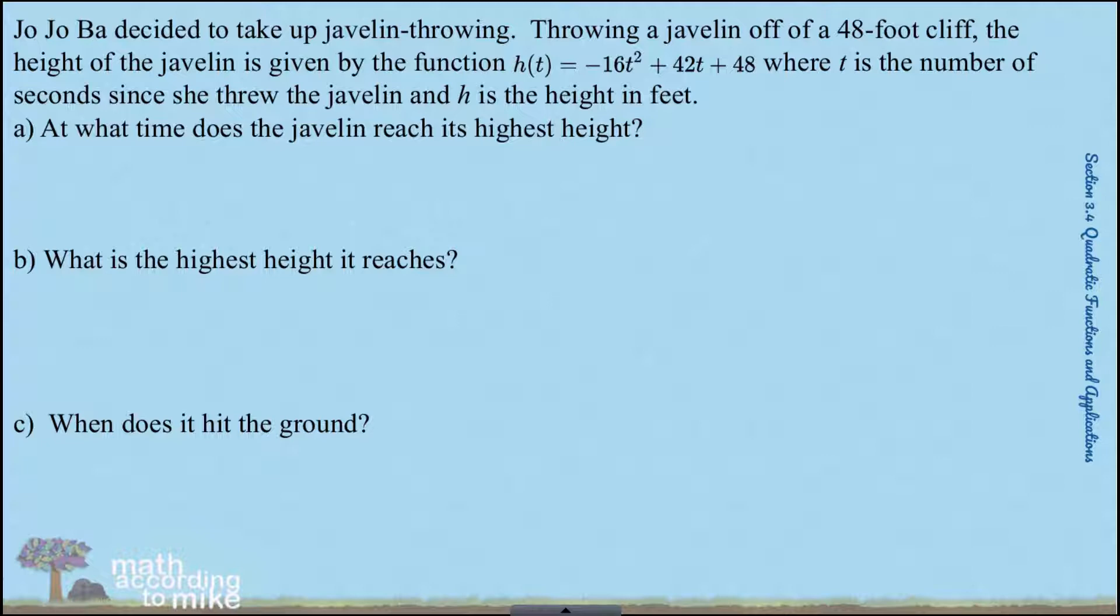So anytime you are asked to maximize or minimize a quadratic function, they are basically saying where's the vertex. Because we have a negative 16t squared here, we should know that we have a parabola that opens down. Now that should make sense because when you throw something into the air it follows an upside down parabola.